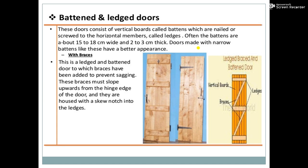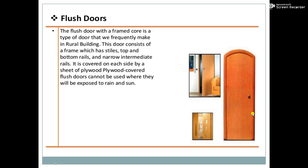This is a ledged and battened door to which braces have been added to prevent sagging. The braces must slope upwards from the hinge edge of the door, and they are housed with a skew notch into the ledges. Sometimes we provide braces in an inclined order which bind these vertical boards in a proper manner.